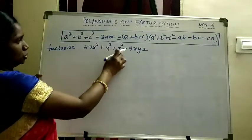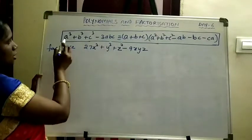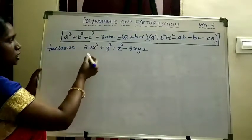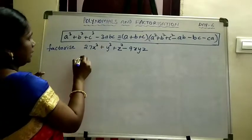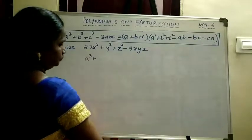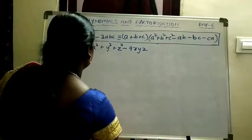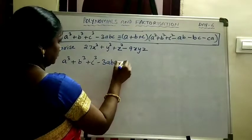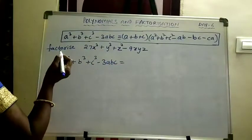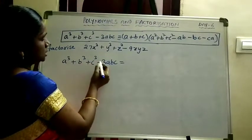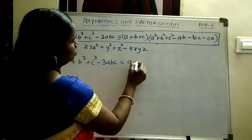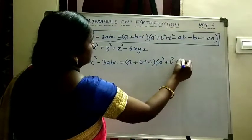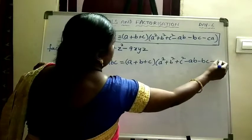We have 4 terms and the variables are in cube form. So here we have the form A cube plus B cube plus C cube minus 3ABC with 4 terms. We compare the given problem with this identity. In place of A cube we have 27x cube. In place of B cube we have y cube. In place of C cube we have z cube. And in place of 3ABC we have 9xyz. So 27x cube: 3 cube is 27, so 27x cube equals 3x whole cube. Therefore A equals 3x, B equals y, and C equals z.